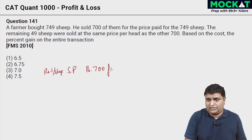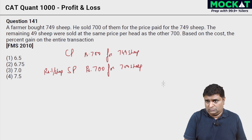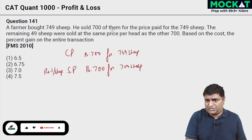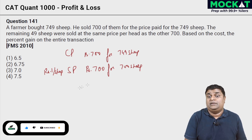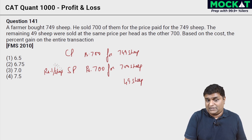700 sheep were sold for 700 rupees. Now, we were told initially we sold 700 of them for the price paid for 749 sheep. So the cost price is the same as the 700 rupees here, but for a total of 749 sheep. The price at which you sold them — that 700 rupees — is what you ended up paying for 749 sheep. The remaining 49 sheep were sold at the same price per head, one rupee per sheep.